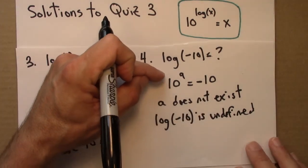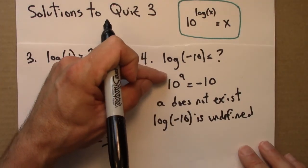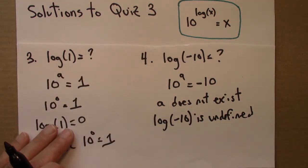So there's no a in this equation. There's no way to make this equation true, to find an a that makes it true. So log of minus 10 is undefined.